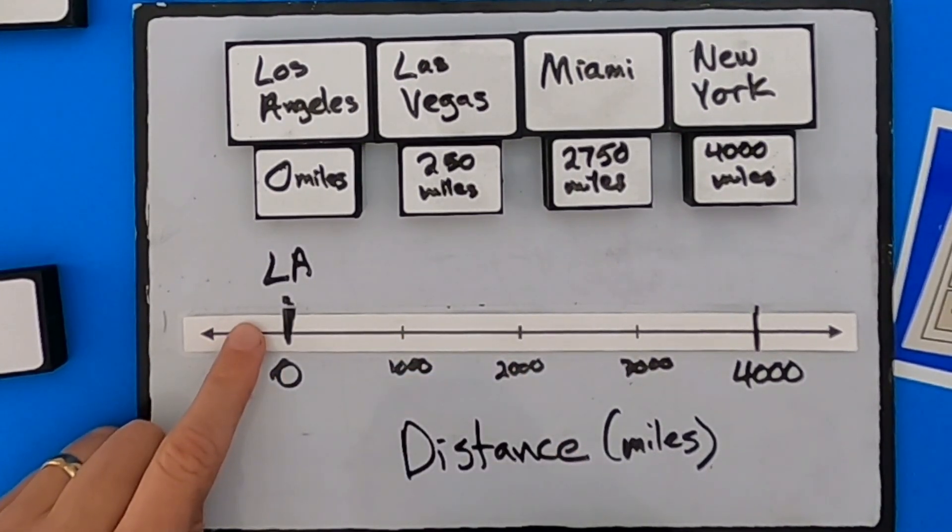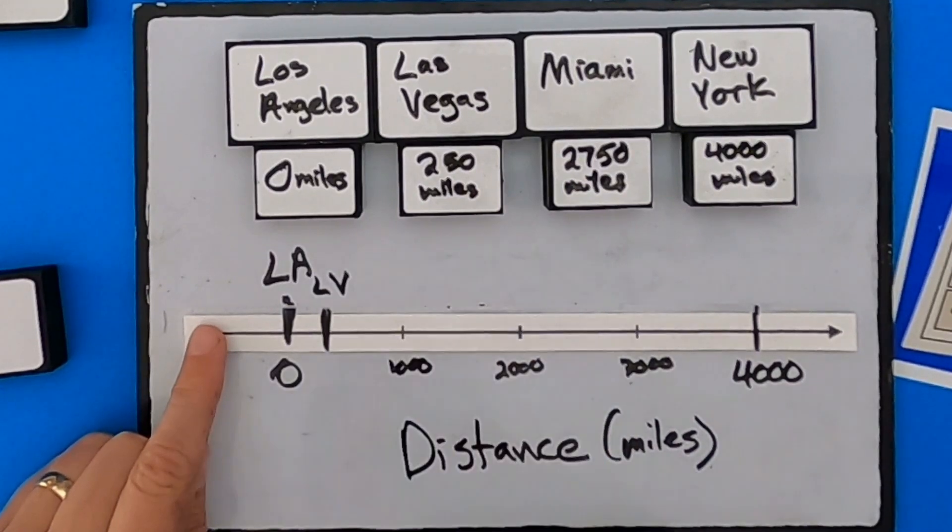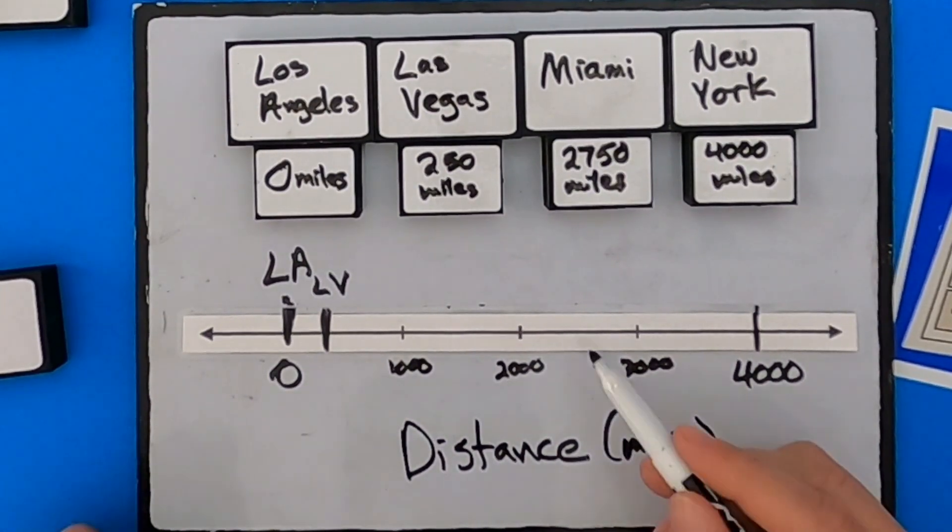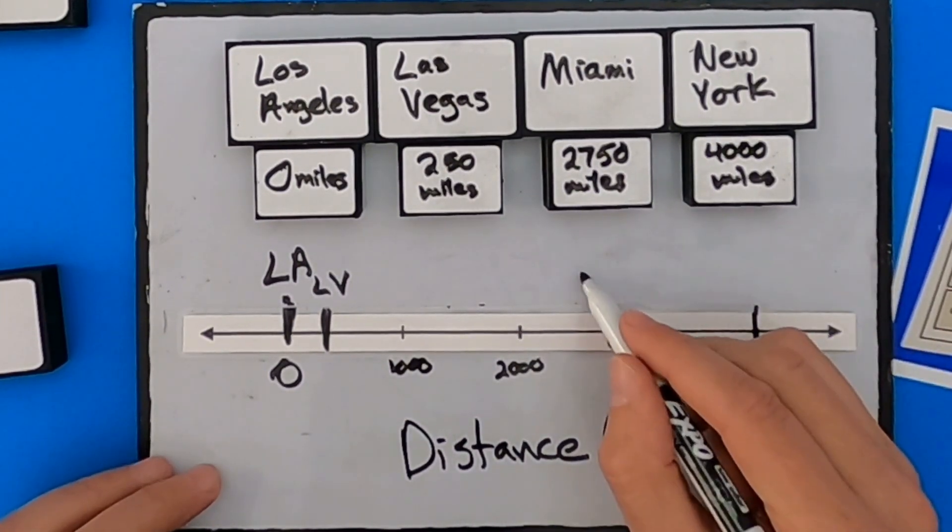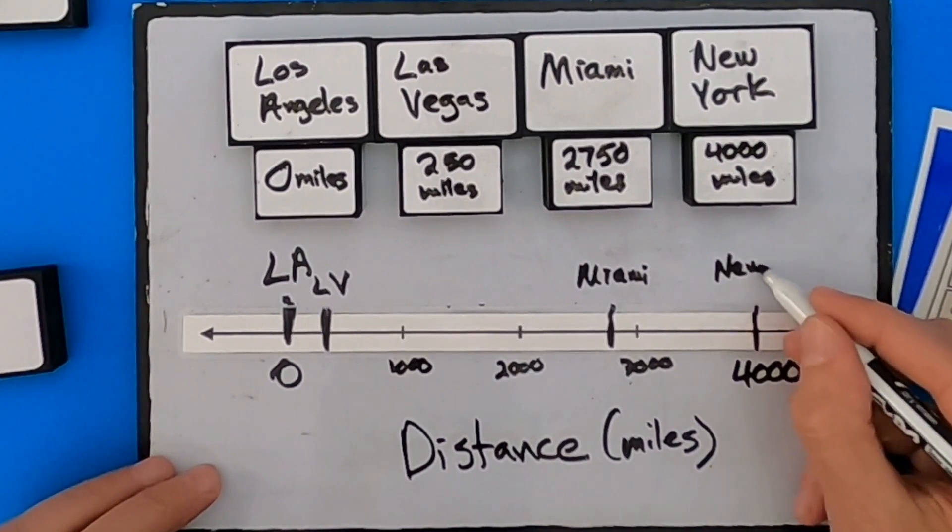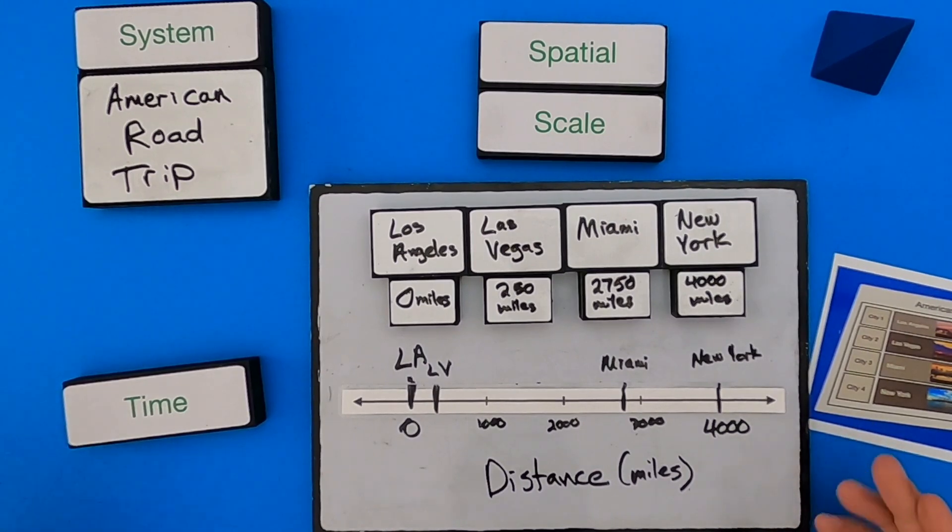Now I need to just create my spatial model. So we could say LA or Los Angeles is right here at zero. Where is Las Vegas? Las Vegas is right here. So it's 250 miles away. So we could say Las Vegas is very close. If we go to Miami, where is that? 2,750, so that would be kind of right about here. So that would be Miami, and then 4,000 is going to be New York. So what do we have now? We have a spatial scale model. It shows me that it's really close. Los Angeles and Las Vegas are close to each other. Miami is quite a bit farther away. It might take us more time to get there, but again, this is not a time scale. It's just showing us where they are all spatially. It also shows me America is really, really big.